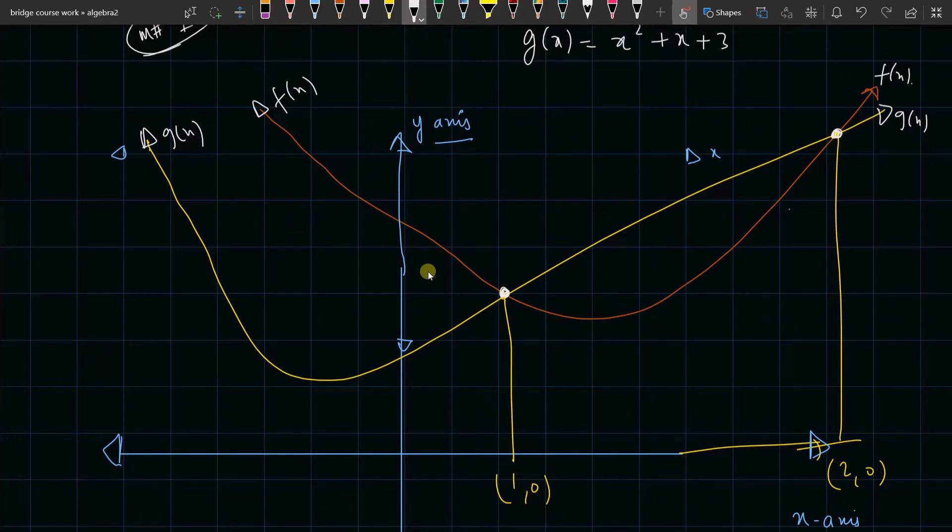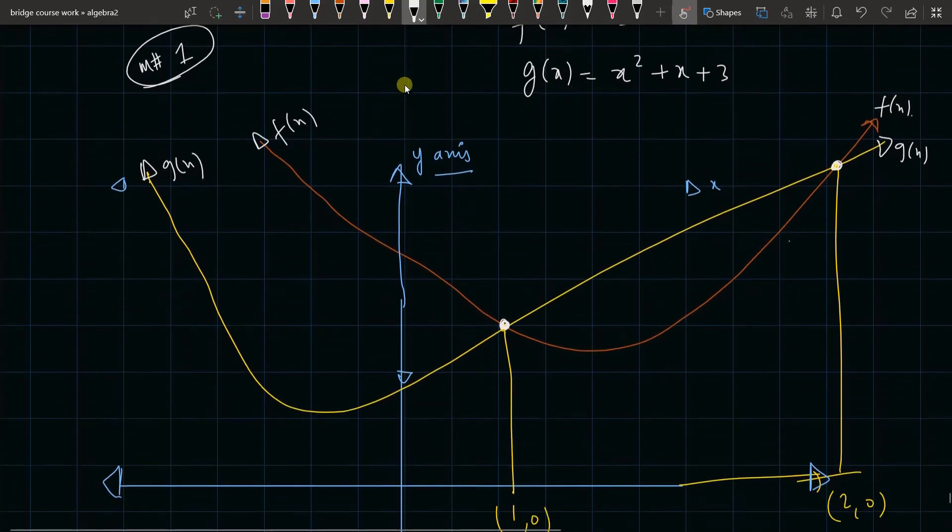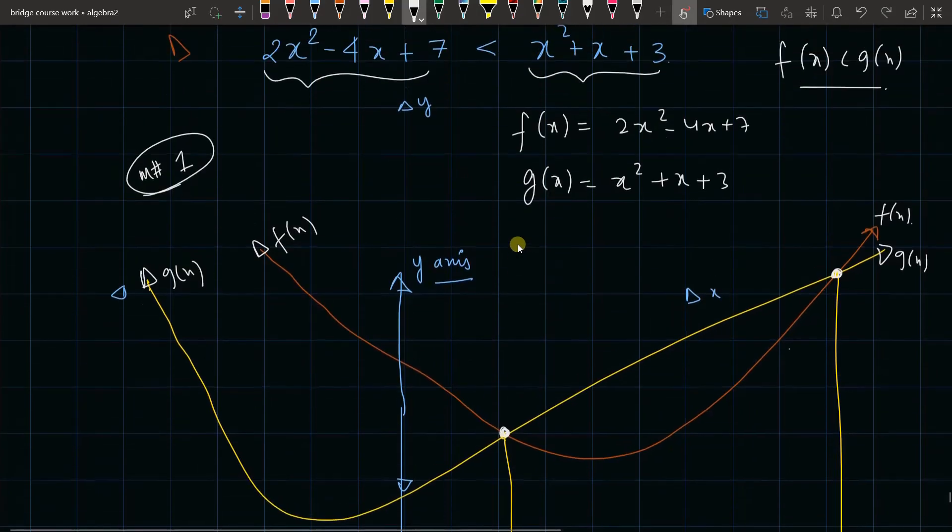Y value I'm not that much concerned because I want the places where it is greater than, and this intersection, so x can tell me all about it. What I see from here is very simple. If I put 1 here, I can even find the value here if you want. If I put 1 here, I'll get 2 - 4 + 7, that is -2 + 7, that is 5. So it is 1 comma 5 over here.